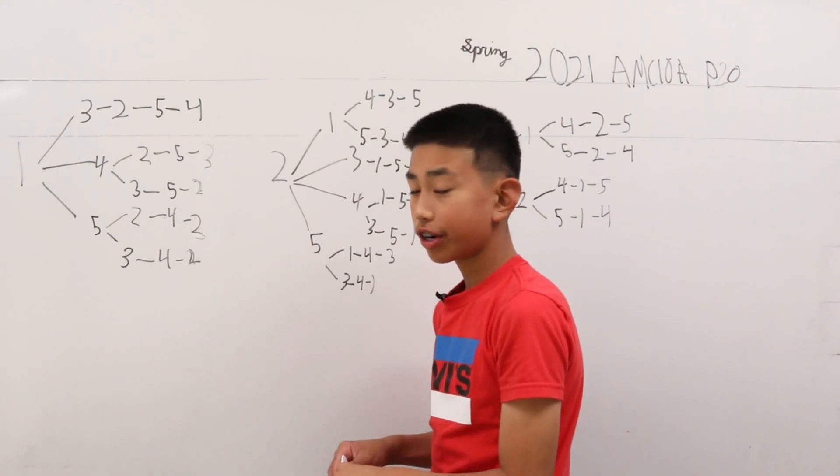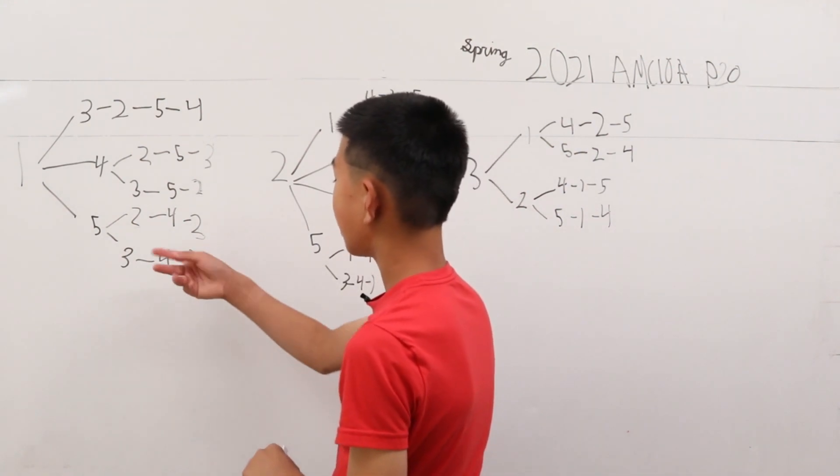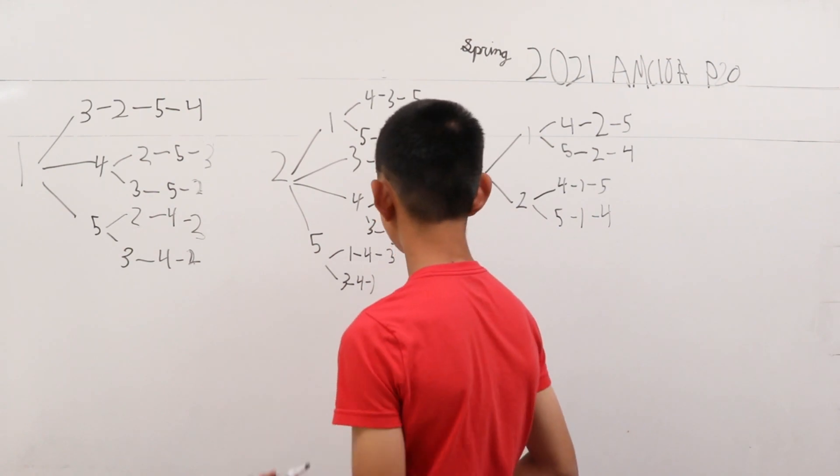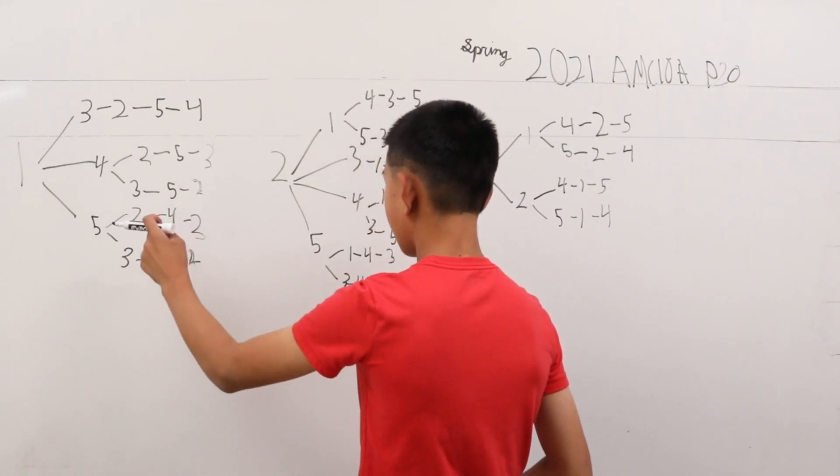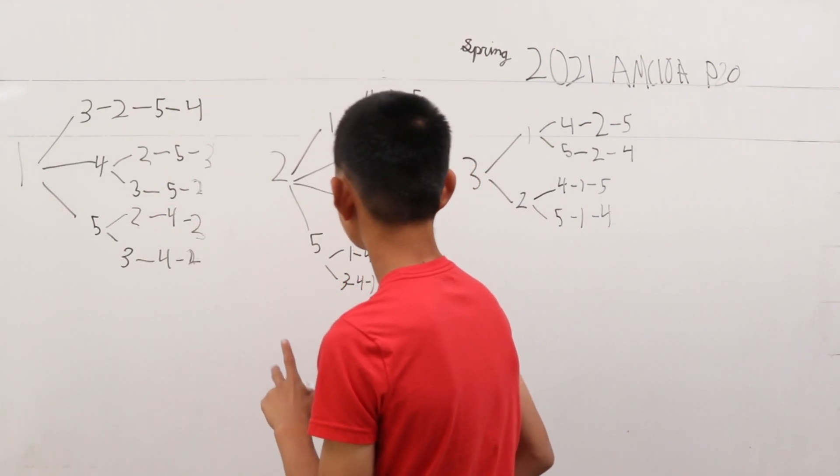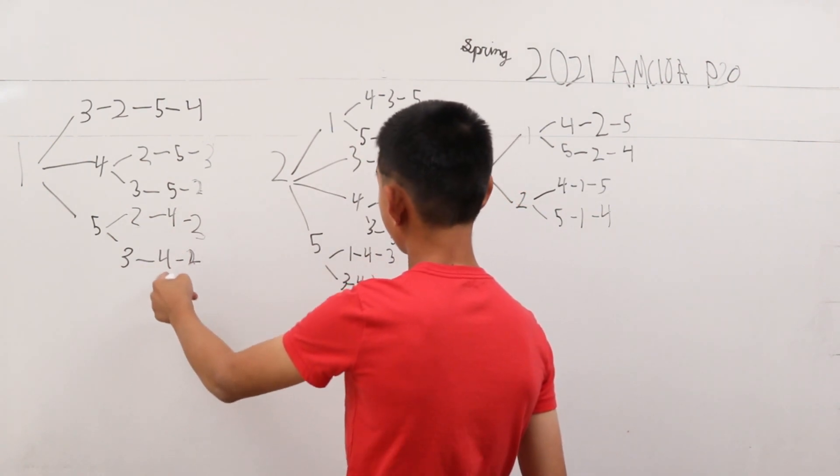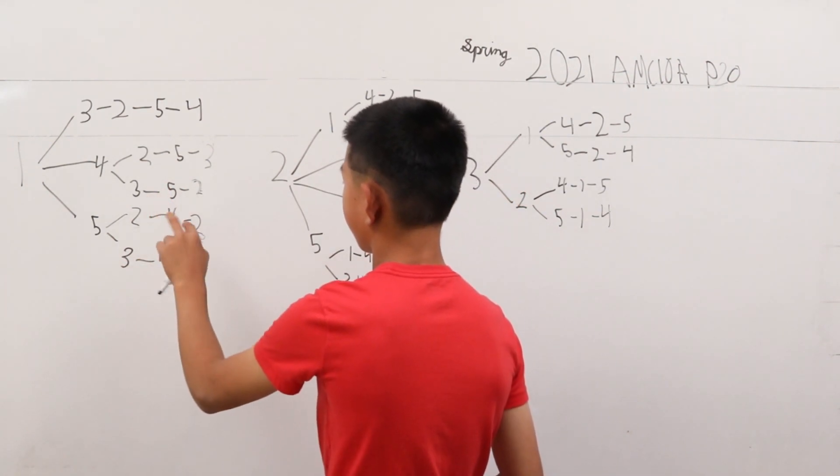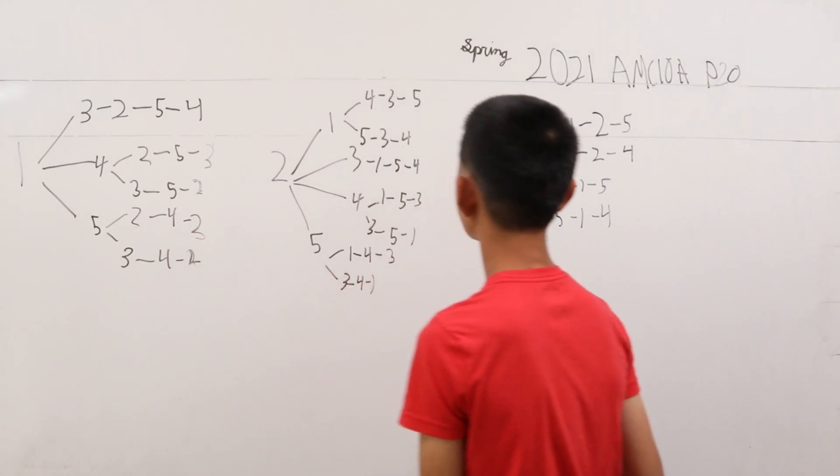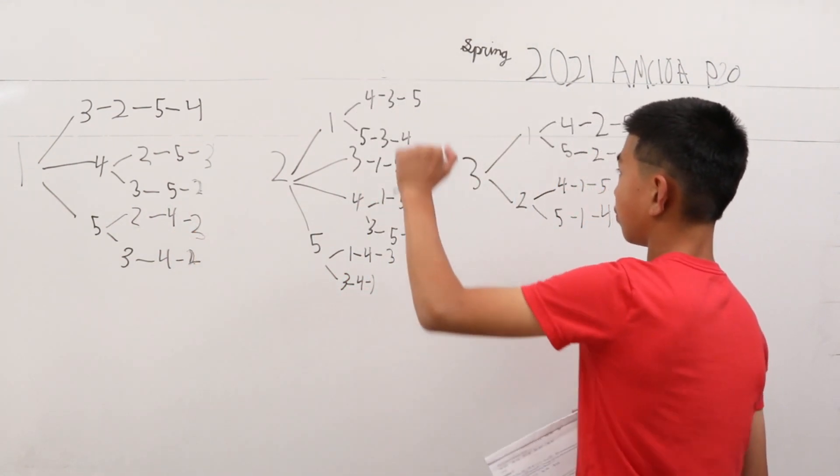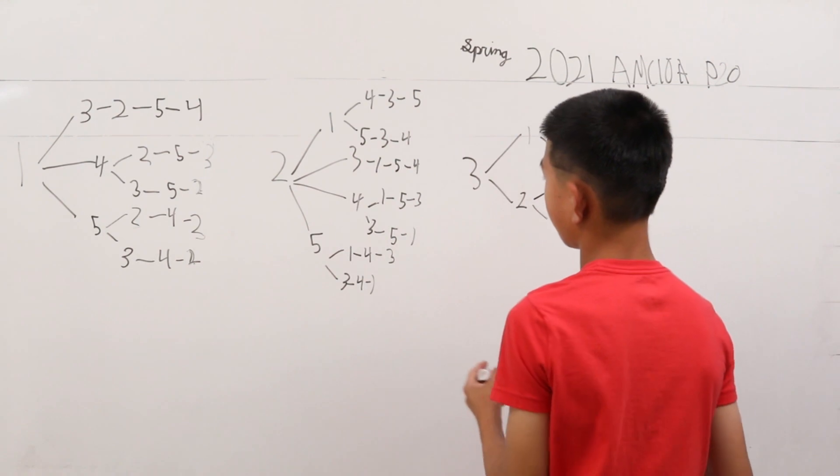Well, you might have already noticed, but when you have a solution in the last three digits that have two possibilities, they're basically reversing all these numbers but keeping the middle number same. So 4, 3, 5 and 5, 3, 4.